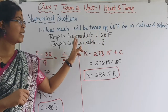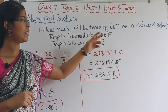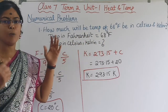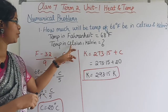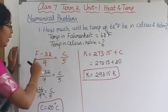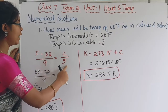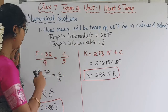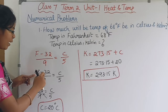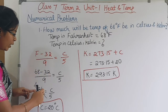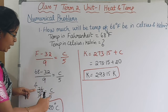We have 68 degrees Fahrenheit and we have to convert it to Celsius and Kelvin. The formula relating Fahrenheit to Celsius is: (F - 32) / 9 = C / 5. We will substitute the Fahrenheit value.